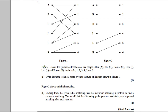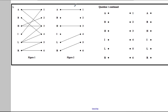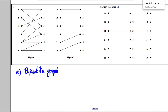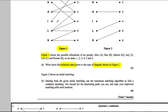We've got a matching question. Figure one shows the possible allocations of six people to six tasks. The question asks for the technical name given to the diagram shown in figure one. The diagram is a bipartite graph. A bipartite graph is a set of nodes X and a set of nodes Y where there are connections or edges between set X and set Y, but not within either set X or set Y.